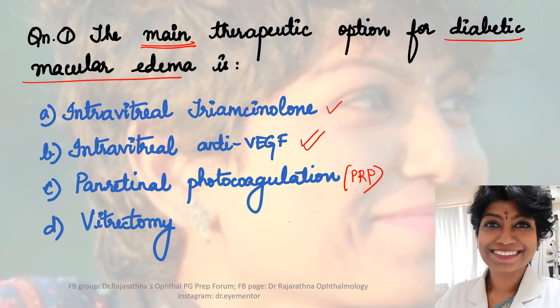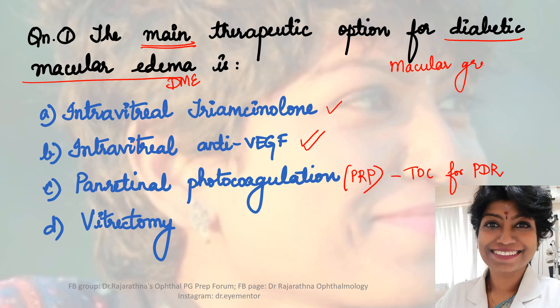Looking at option C, which is pan retinal photocoagulation - PRP, which many of you selected. PRP is the treatment of choice for proliferative diabetic retinopathy, which is independent of diabetic macular edema. A patient may have DME in the presence or absence of PDR. PRP is not part of the treatment for diabetic macular edema. Macular grid laser is different - it's done with lower laser power settings. In PRP, the macula is spared, so it's treatment of choice for PDR only.